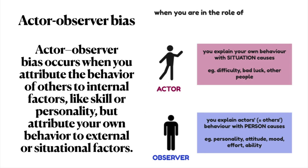Actor-observer bias occurs when you attribute the behavior of others to internal factors, like skill or personality, but attribute your own behavior to external or situational factors. In other words, when you are the actor in a situation, you are more likely to link events to external factors, such as your surroundings or environment. However, when you are observing the behavior of others, you are more likely to associate behavior with their personality, nature, or temperament.